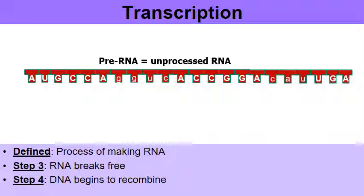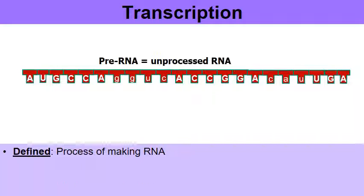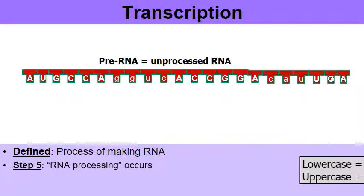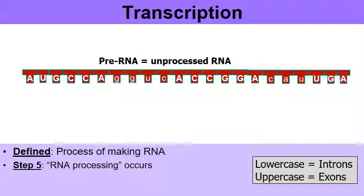Notice there's some capitalized letters and some lowercase letters. Now we're going to see why those are there. Near the end of transcription, there's an event called RNA processing. In the key, I labeled the uppercase letters as exons, and the lowercase letters as introns.